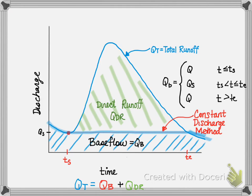The overall flow rate, QT, is equal to the base flow, QB, plus the direct runoff.